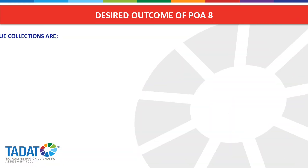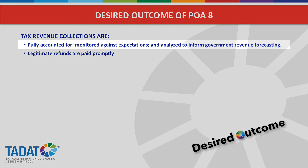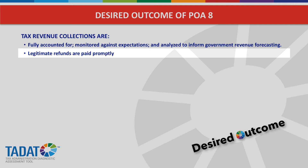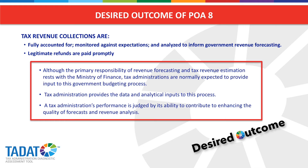Let's first look at the desired outcome. The desired outcome for POA 8 is that tax revenue collections are fully accounted for and monitored against expectations and analyzed to inform governmental revenue forecasting. Another aspect is that legitimate refunds are paid promptly. Although the primary responsibility of revenue forecasting and tax revenue estimation rests within the government finance agency, tax administrations are normally expected to provide data and analytical input to this governmental budgeting process. The tax administration should maintain a system of revenue accounts and ensure that tax refunds are paid out promptly.